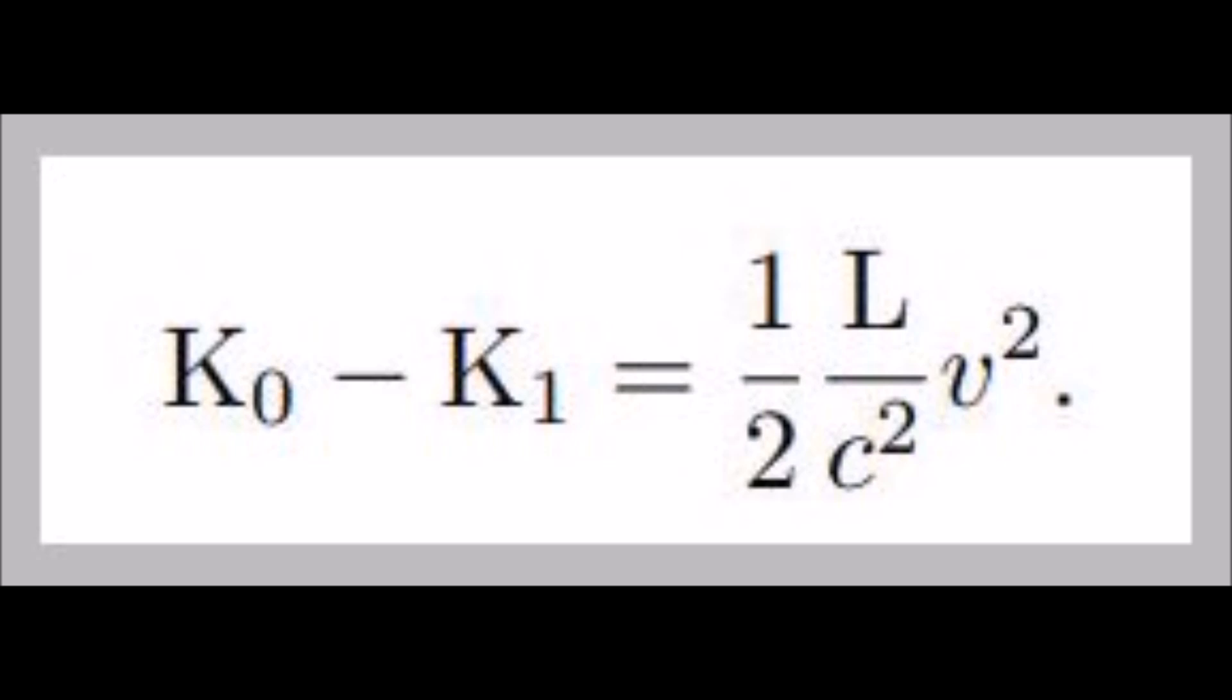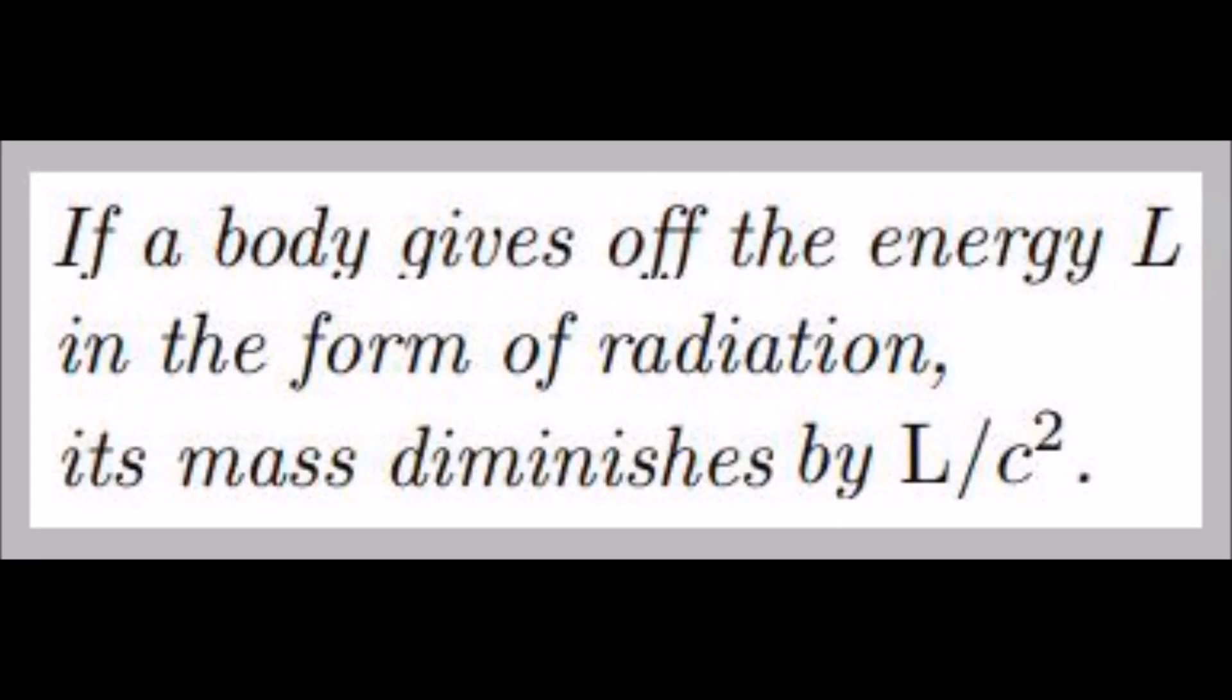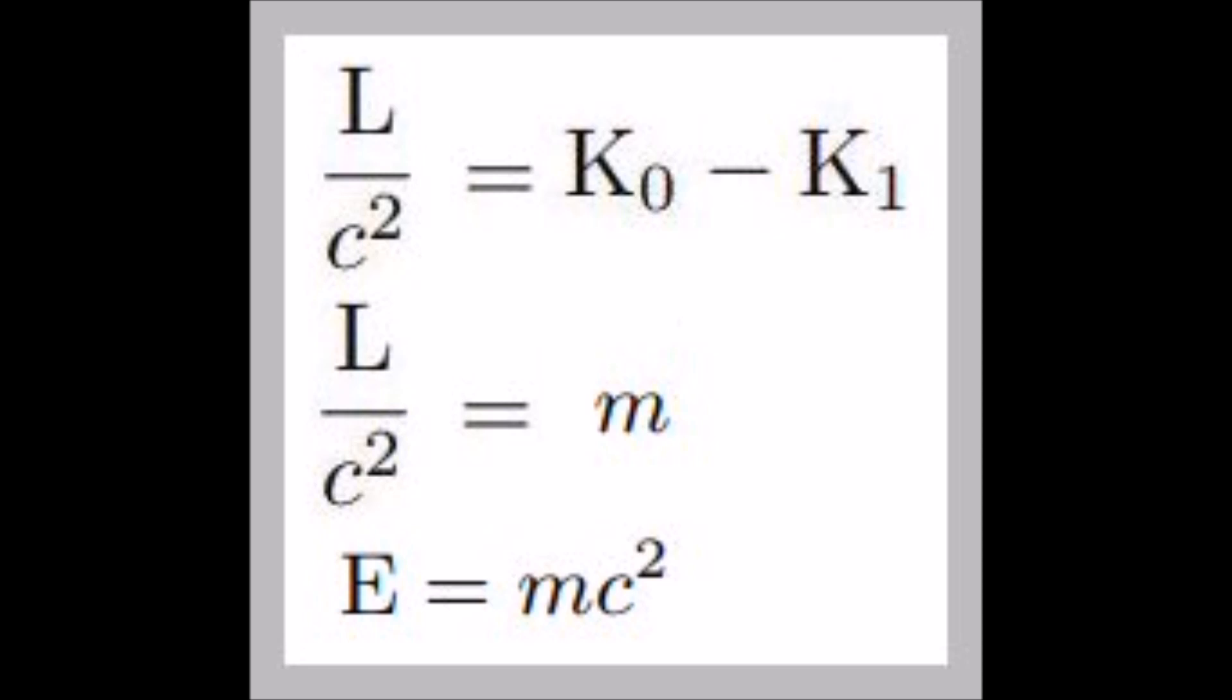Einstein's comment on this result is: if a body gives off the energy L in the form of radiation, its mass diminishes by L divided by c squared. Using a supposed more modern and universally accepted E instead of L to denote energy, and by algebraically switching sides, it becomes E equals mc squared.